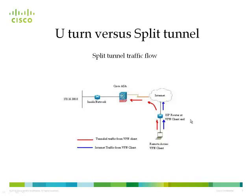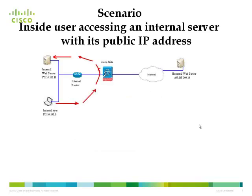Here is a synopsis of how U-turn differs from split tunnel. In split tunnel, tunneled traffic and internet traffic are split at the VPN client end — only tunneled traffic reaches the VPN gateway, while internet traffic is routed directly from the ISP router of the VPN client to its destination. In our scenario, no split tunnel is used, so all traffic from the VPN client is tunneled and reaches the VPN gateway device.